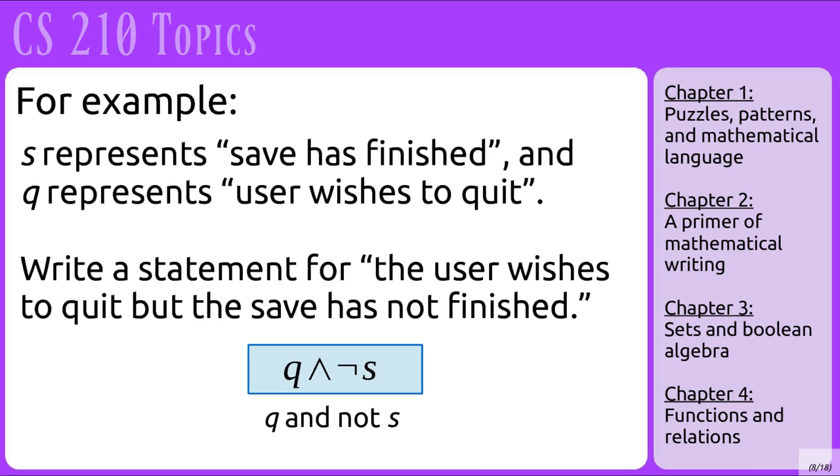One of the things we will be doing in chapter 1 is to use propositional variables to signify different statements. For example, we can have S represent save has finished, and Q represent user wishes to quit. If we want to write a statement that says the user wishes to quit but the save has not finished, we can write this out symbolically with Q, the AND sign, the negation sign, and S. This is similar to what you would be doing in programming, except the symbols are different.